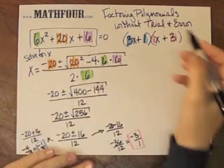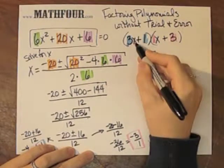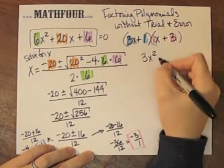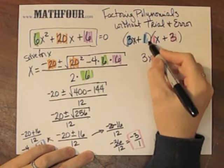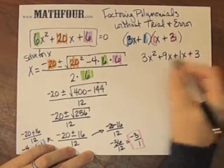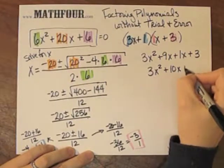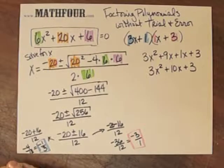And so we check it. And we go, did we get 3x squared? Things aren't looking good. 3x squared plus 9x plus 1x plus 3. Huh. That doesn't look quite right.